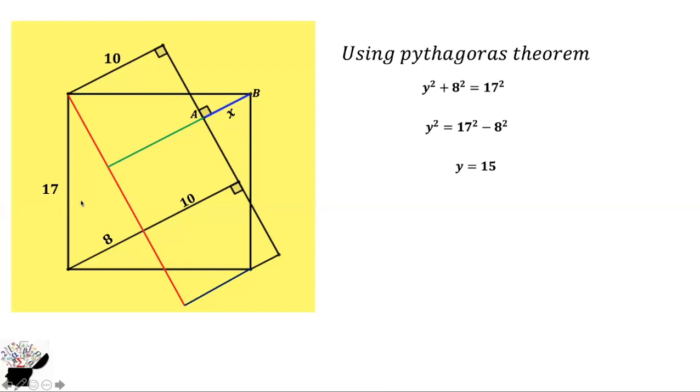It means that these two triangles are congruent, which means if this side is 8, automatically this side is also 8. This is already 10, so this side is 8. We know the full length of this is 15, so it means this side is also 7.